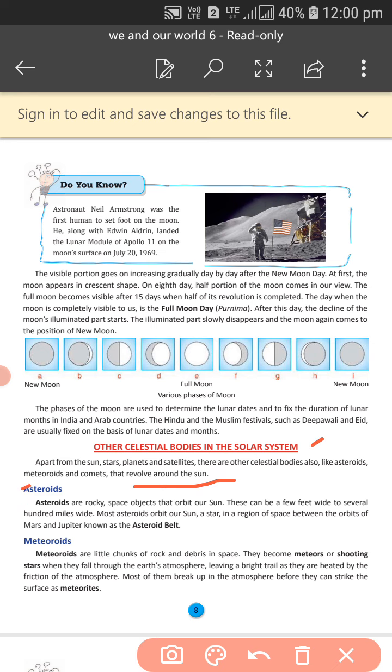Asteroids. Asteroids are rocky space objects that orbit around our sun in a specific path. These can be a few feet wide to several hundred miles wide. Most asteroids orbit our sun in an area of space between the orbits of Mars and Jupiter known as the asteroid belt.